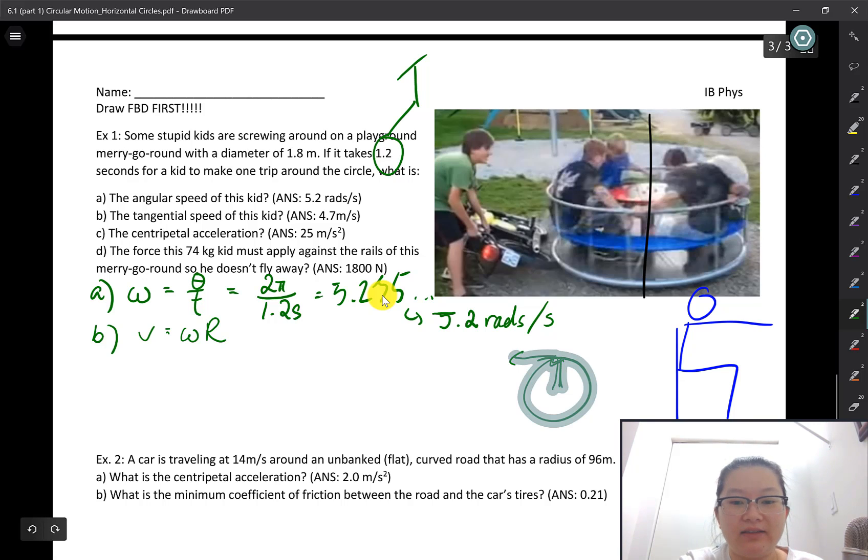Let's calculate the tangential speed for the kid, assuming he's sitting right at the edge of the merry-go-round. That would be his omega, which I'm going to use my non-rounded value, 5.23598, multiplied by the radius of where he would be sitting, that's roughly about the 0.9 meter mark away from the center. So 5.235 dot dot dot rads per second, and I'm gonna take that and multiply by 0.9 meters, which is the radius from the center of the circle. That's times 0.9, gives me 4.712 dot dot dot meters per second.